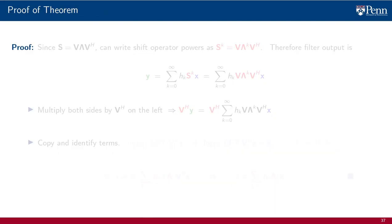Before we elaborate more on the consequences of this theorem, let's give a proof. It's not difficult. Recall that the spectral decomposition of the shift operator says that s equals V times lambda times V Hermitian. It follows that s to the power of k can be written as V times lambda to the power of k times V Hermitian.